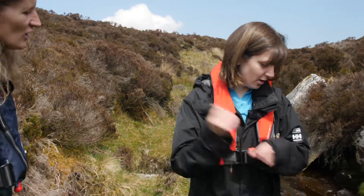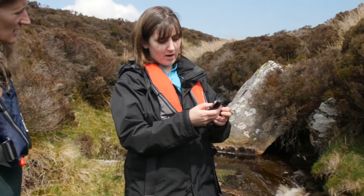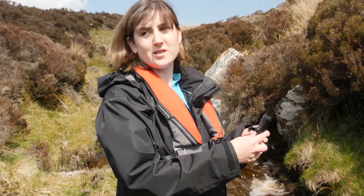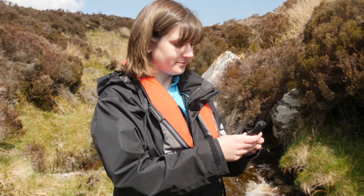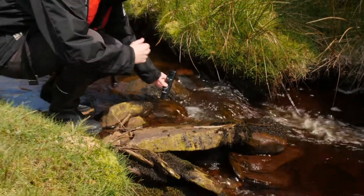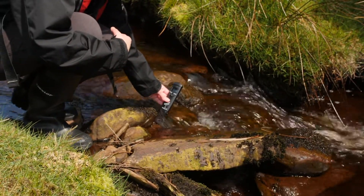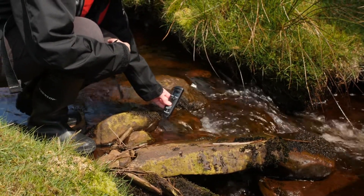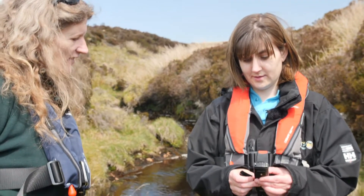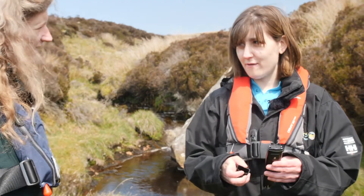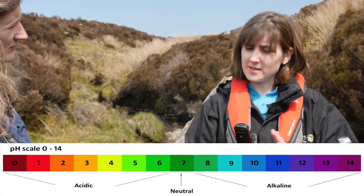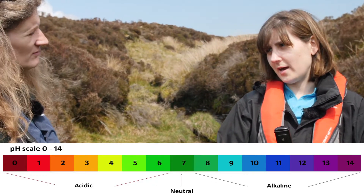Shall we test that? I'm using a little meter here and it will test my pH and my conductivity. We got a result of 7, which is a neutral pH. Below 7 it's more acidic and above 7 it's more alkaline.